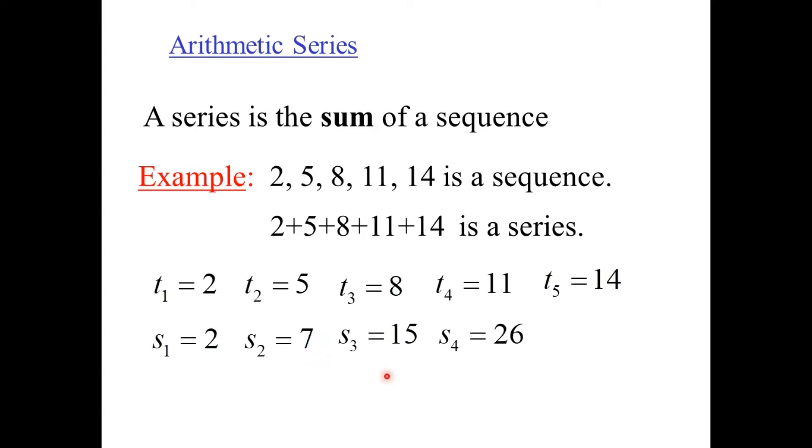Now what one might do is go, well, S sub 4 is going to be S sub 3 plus 11. So S sub 4 is really the previous sum plus the current term. That's one way to get it, or you could just go 2 plus 5 plus 8 plus 11 is 26.